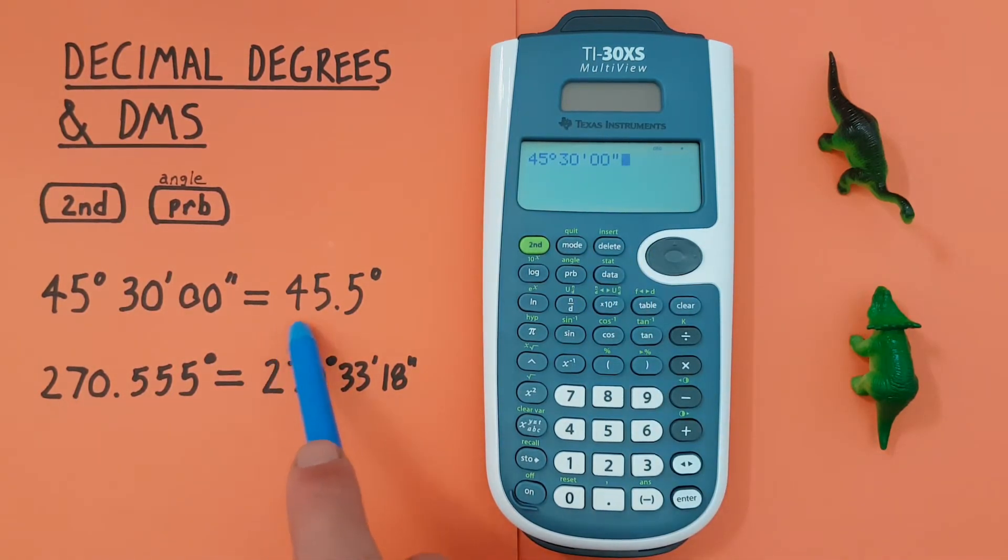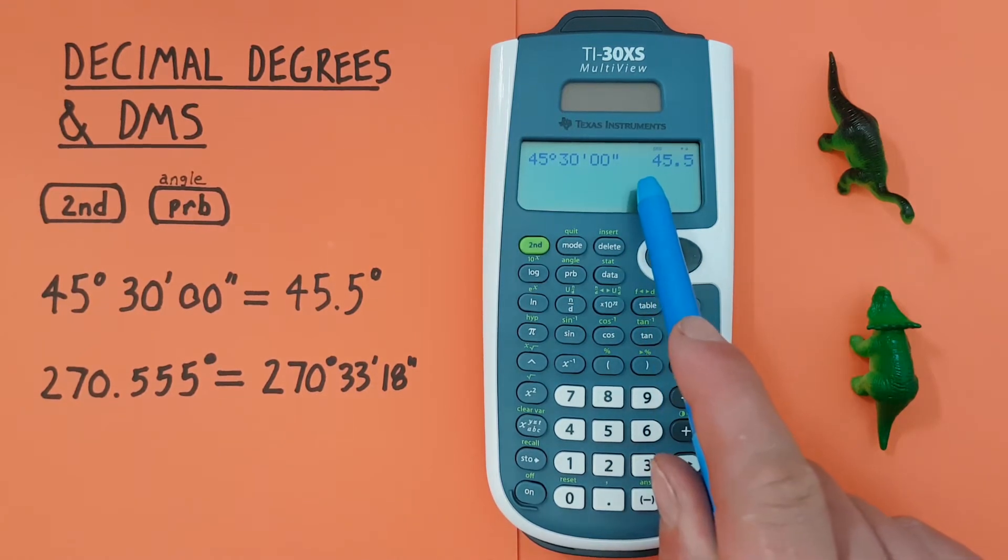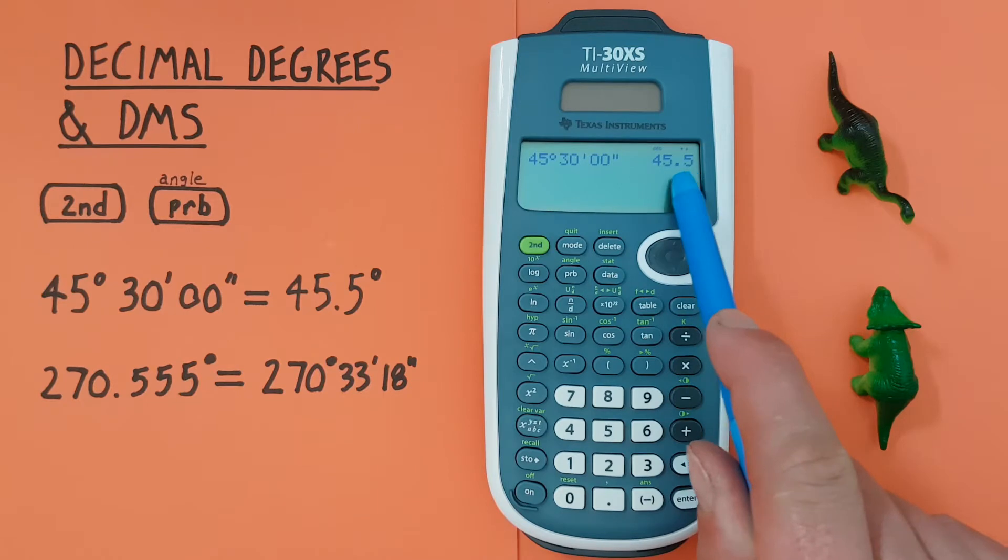If we wanted to convert this to decimal degrees all we have to do is press enter and we now see we have 45.5 decimal degrees.